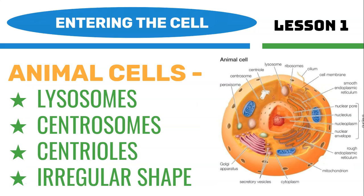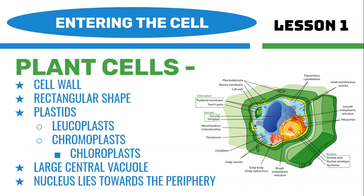In an animal cell, these are the key organelles that plant cells don't have. They have lysosomes, which contain hydrolytic digestive enzymes that can break down any foreign materials that enter the cell or any worn-out organelles. They also have centrosomes and centrioles, which are organelles that assist the cell and initiate cell division. Typically, animal cells have irregular shapes, unlike plant cells which have a standard box shape.